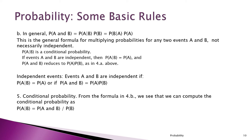Similarly, we can use the multiplication rule to determine independence. If the probability of A times the probability of B is exactly equal to the joint probability of A and B, that's proof enough that events A and B are independent of each other.